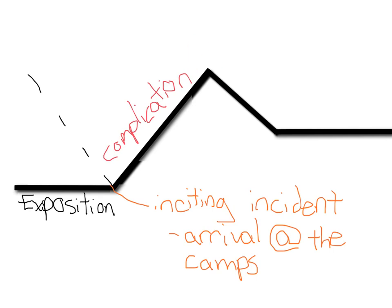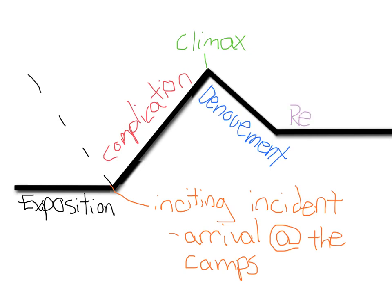At the top we have the climax. Remember, the climax is everything after Elie loses faith in God — that triggers the climax — and that leads through everything until the liberation of the camps. After the liberation of the camps, we have the denouement. Make sure you know how to spell denouement — you lose points every time you spell it incorrectly. The denouement is everything leading to Elie's father's death.